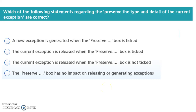Hi everyone. In this video we are going to discuss some Blue Prism interview and exam related questions. The first question is about the type and detail of the current exception. Which one is correct? The current exception is released when the post-back box is ticked. The second one is right for the exception.